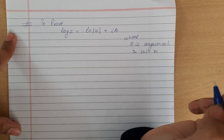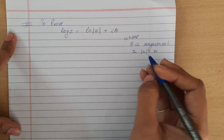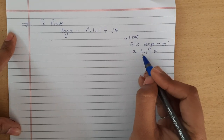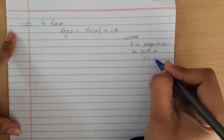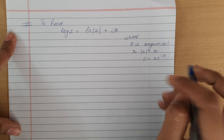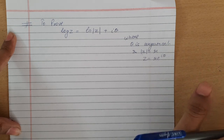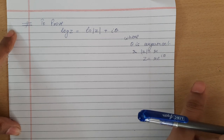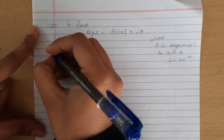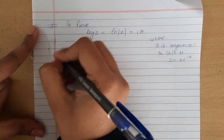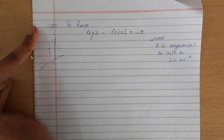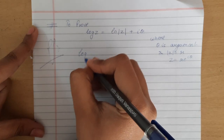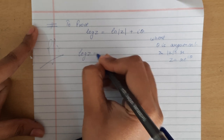Here we have to understand: if mod z is r, which means z equals r·e^(iθ). Now let us start its proof. By the definition of logarithmic function, let log of z be equals to w.